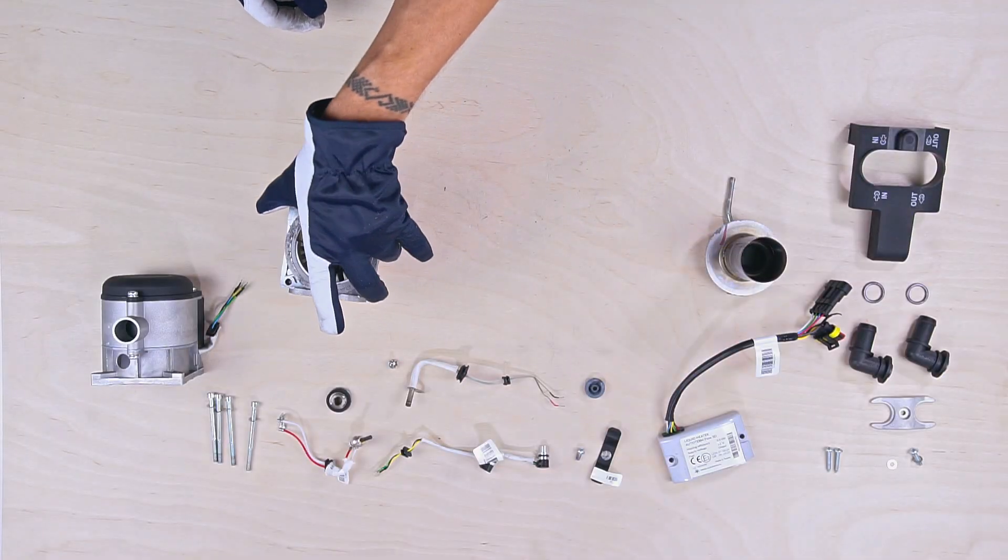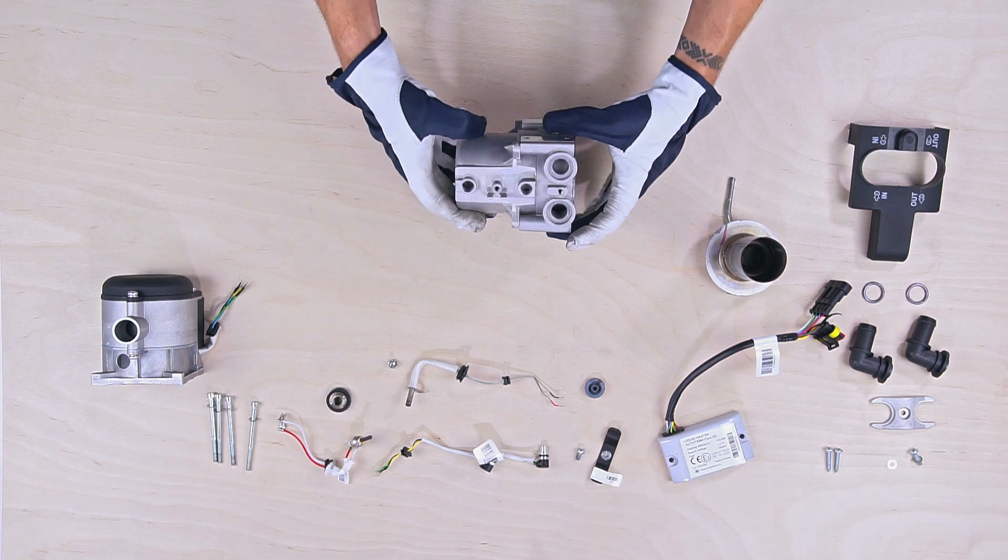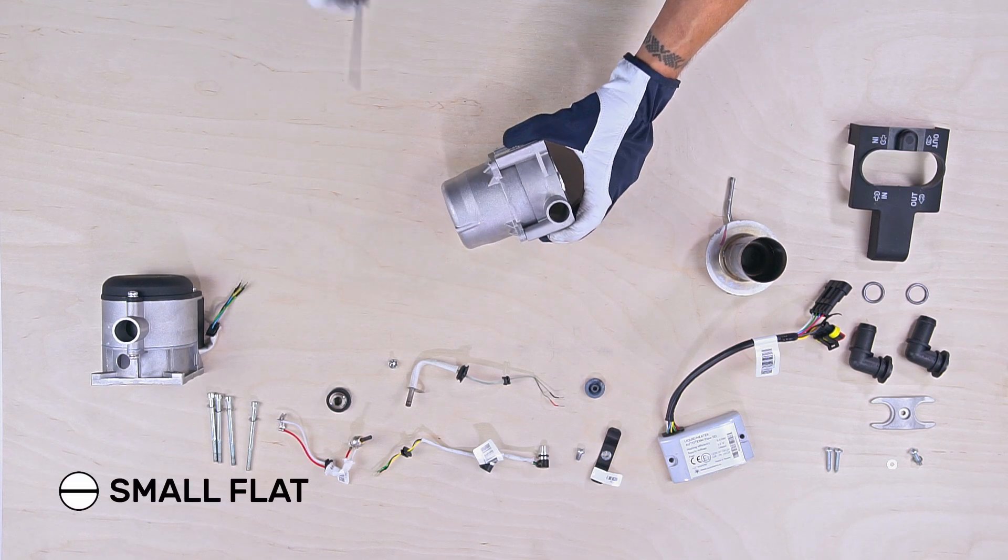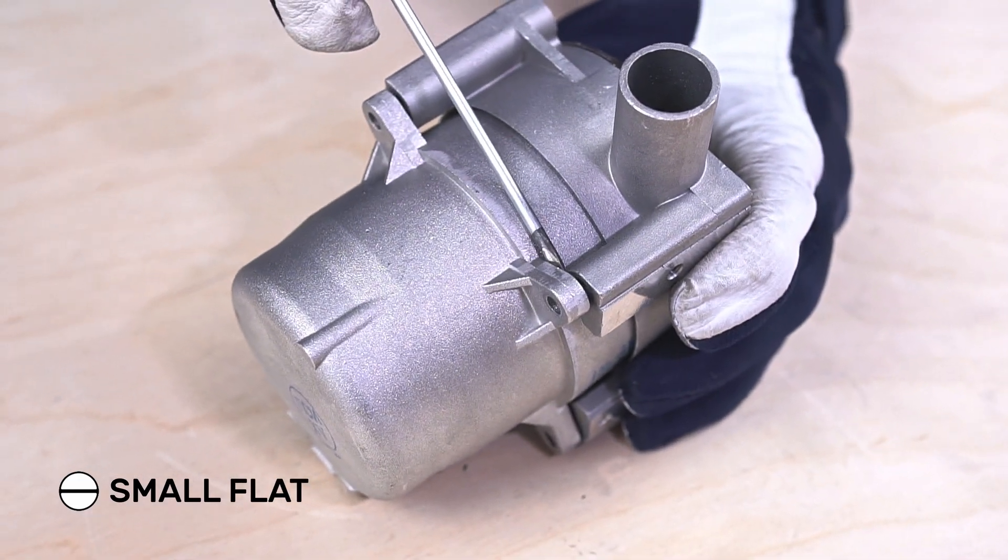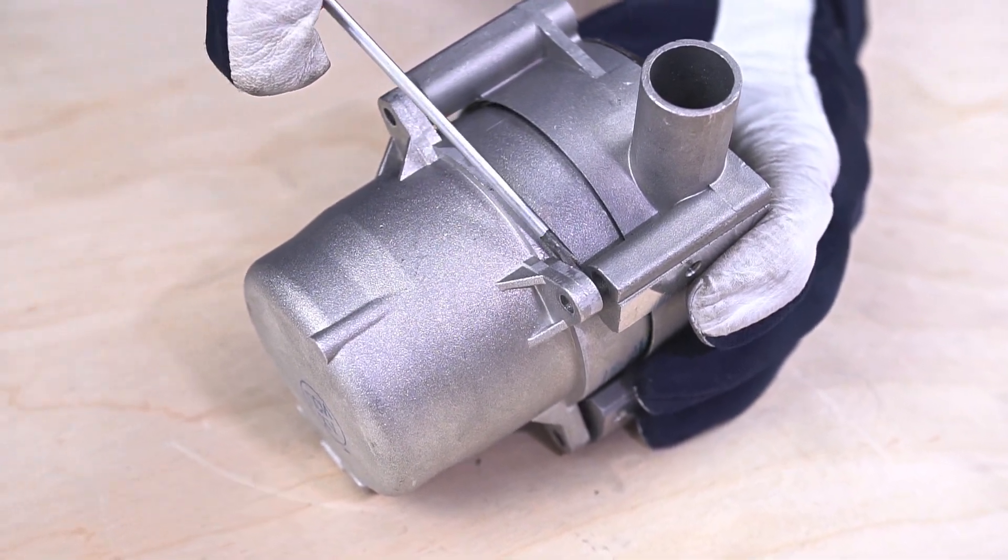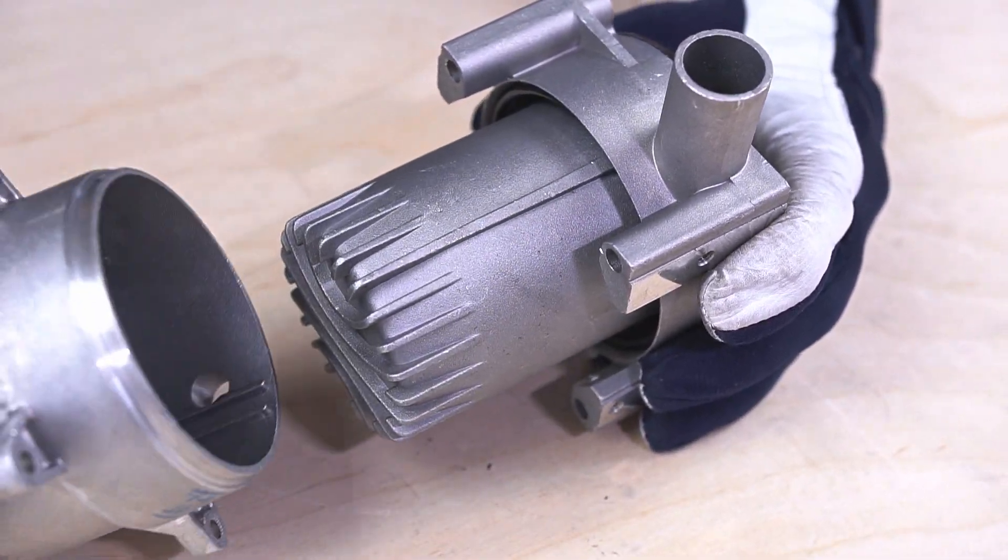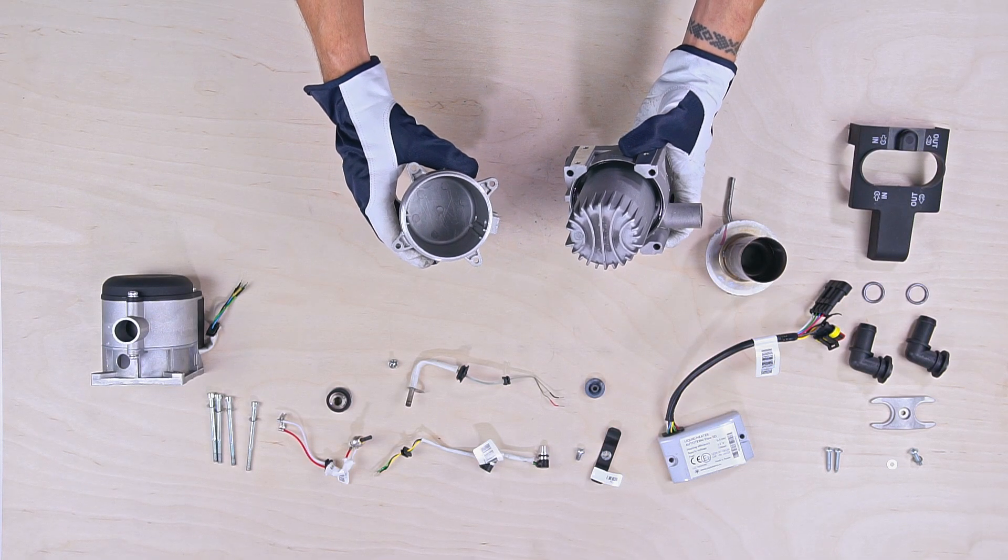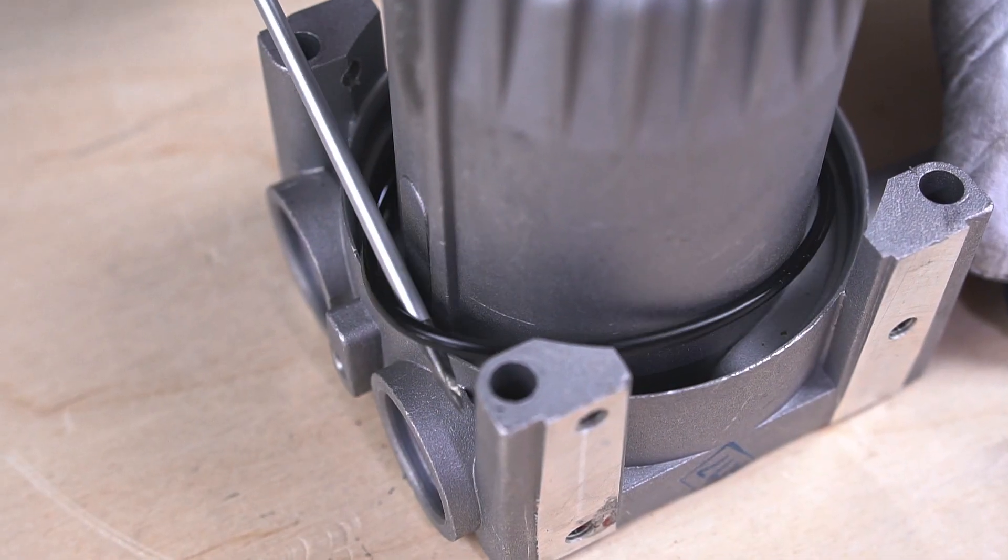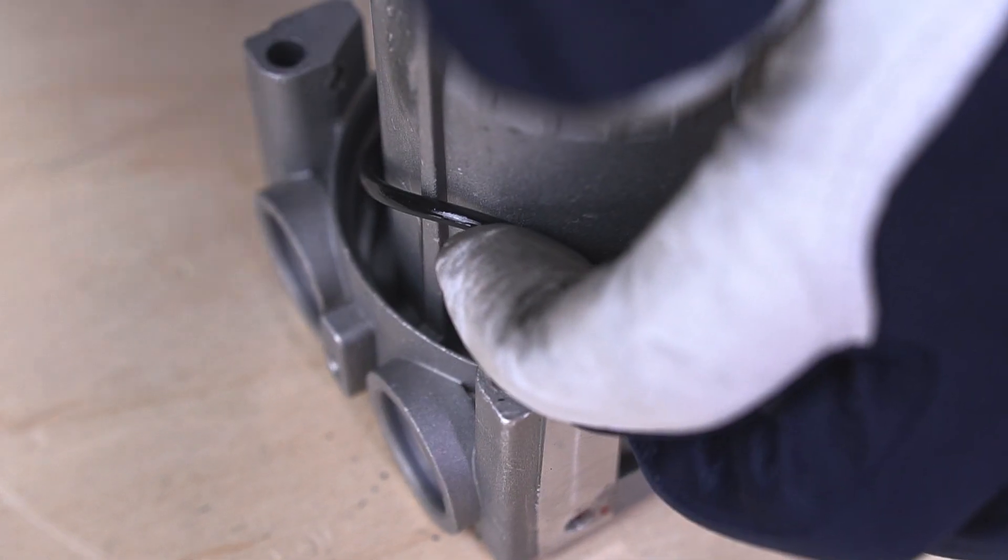Next, we will separate the casing from the heat exchanger. With the small flat screwdriver, get in between both parts and pry them apart. Remove the casing from the heat exchanger. Remember to change this O-ring seal after repairing.